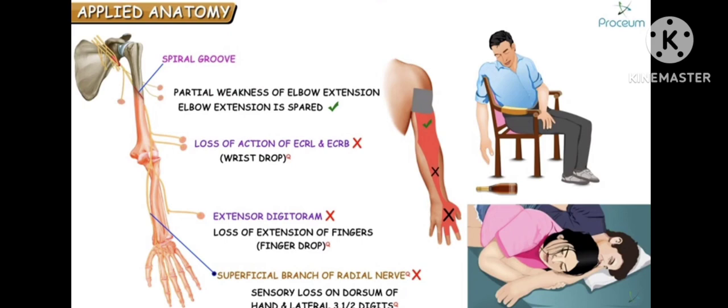After drinking alcohol, the person falls asleep in a chair in an awkward position, compressing the radial nerve — hence the name Saturday night paralysis.